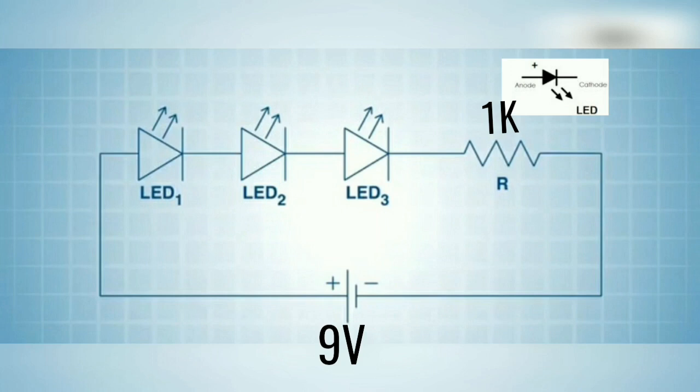Let's read the circuit diagram. 3 LEDs are connected in series. Positive terminal of LED 1 is connected to VCC and negative terminal of LED 3 is connected to ground through a 1 kOhm resistor.